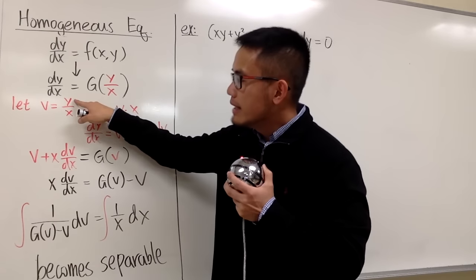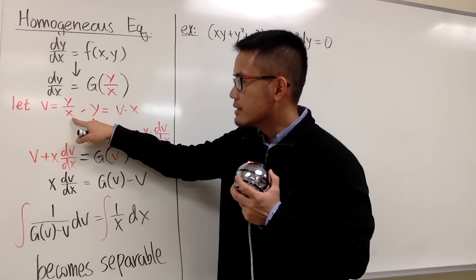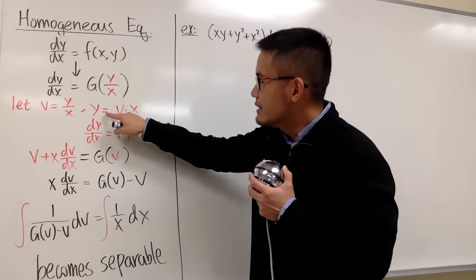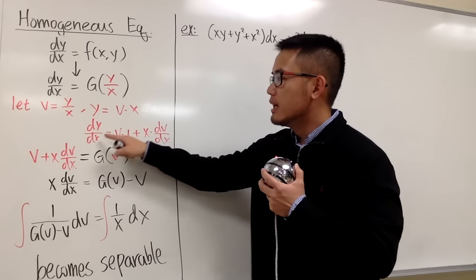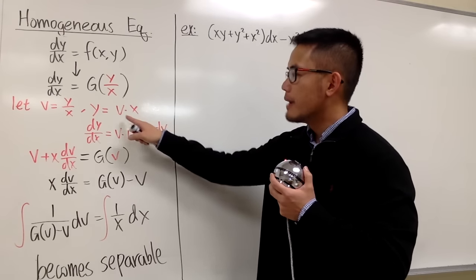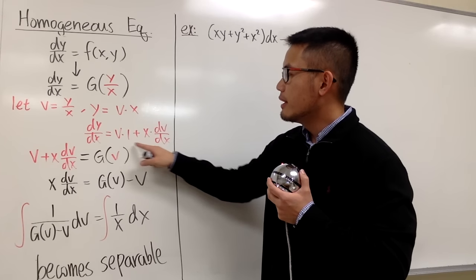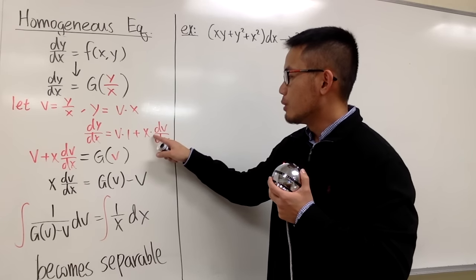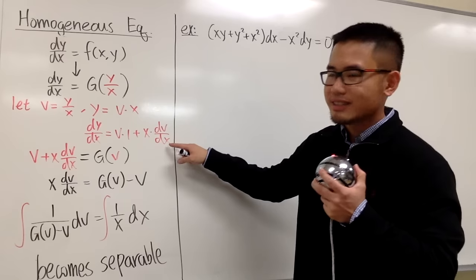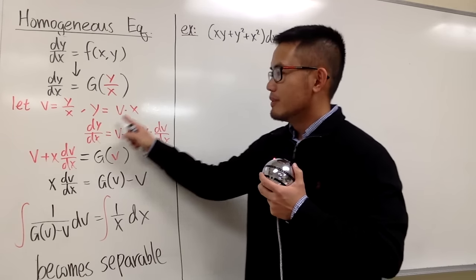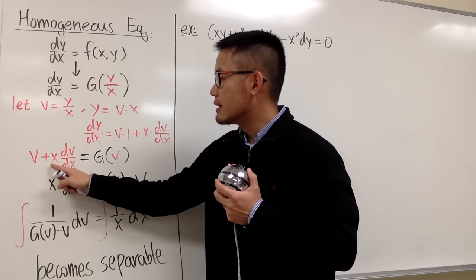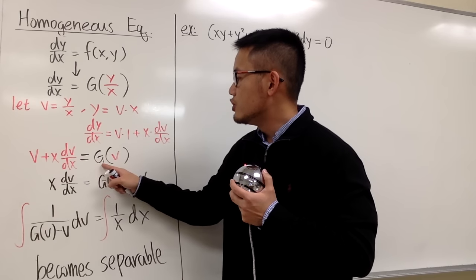Notice that y is a function of x, x is of course a function of x, and v equals y/x so v is also a function of x. Since y equals v times x, we differentiate both sides. The left-hand side is dy/dx. On the right-hand side we use the product rule: we keep v times the derivative of x (which is 1), then add x times the derivative of v, which is dv/dx. So dy/dx equals v plus x dv/dx, and this equals g of v.